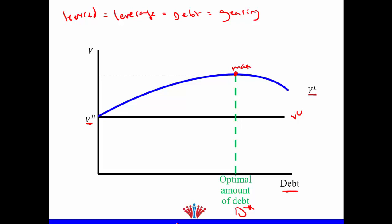That's why we need to use a theory called capital structure theory in order to get our optimal level of debt — that's why we call it our optimum capital structure. If we use any other debt level, for example D1 here, it will give a lower value. If we use more debt beyond the maximum, it also gives a lower value. Our best level of debt is the one that maximizes our firm value.